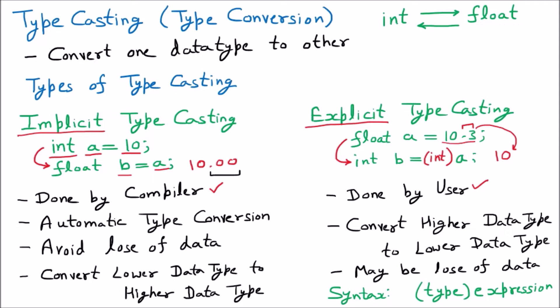It is automatic type conversion because there is no involvement of the user. It avoids loss of data - there is approximately no loss of data. Because if I say that the integer value is 10 and we are converting that value to float, so it is 10.00, there is no loss of data.